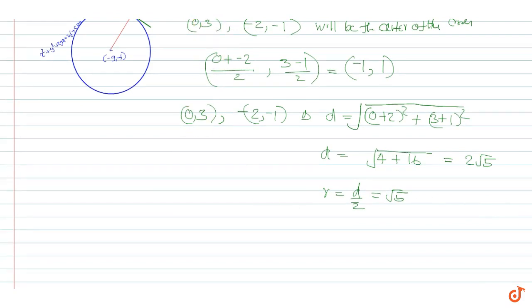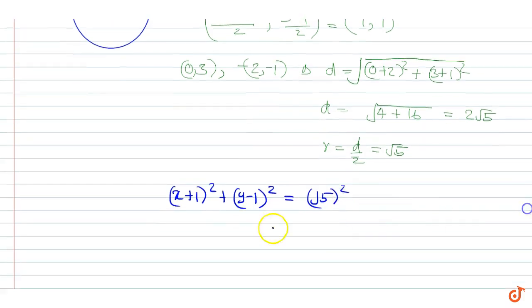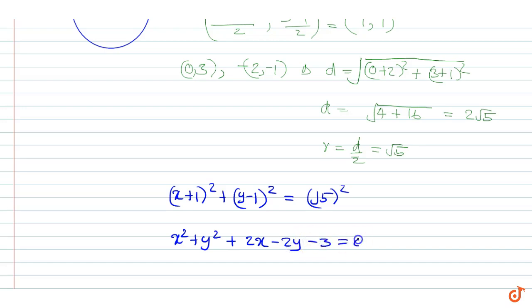Therefore the equation of the circle is (x + 1)² + (y - 1)² = (√5)², which expands to x² + y² + 2x - 2y - 3 = 0.